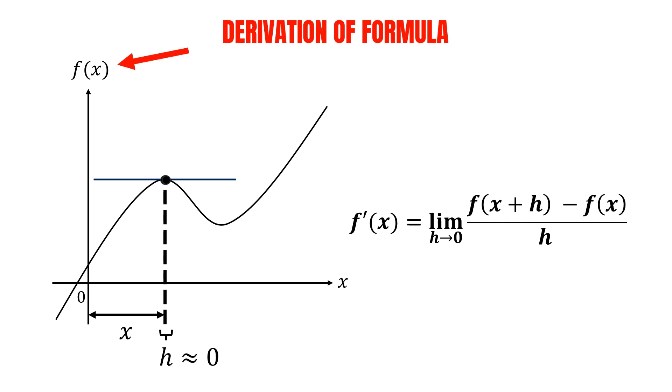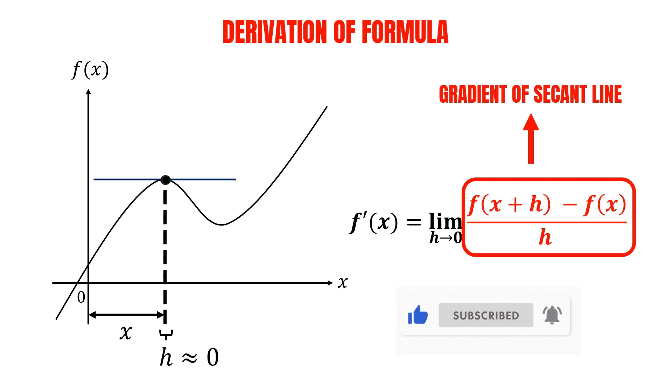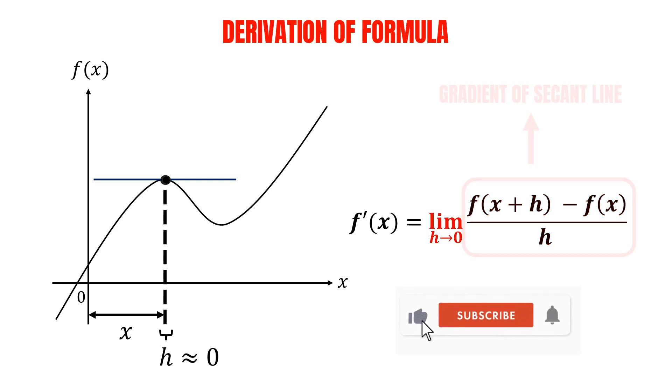In conclusion, the derivative of the function f of x, which is denoted as f prime of x, is equal to f of x plus h, minus f of x, divided by h, as h approaches zero.